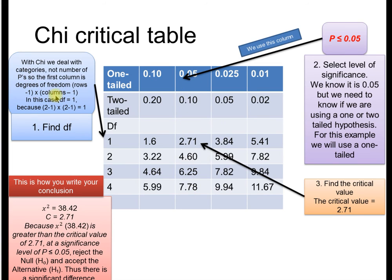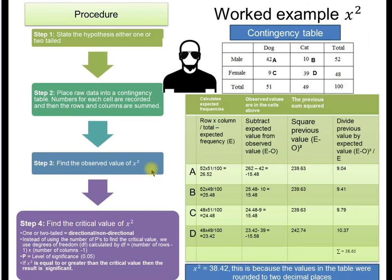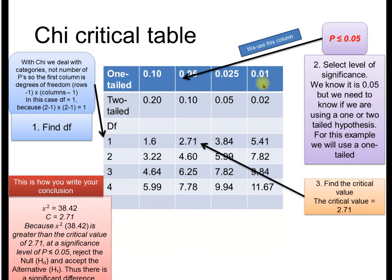The degrees of freedom we work out using this formula here. You take the contingency rows, so we've got two rows and two columns. Rows minus one times columns minus one is two minus one is one. Two minus one is one. Therefore, it's one times one. One times one is one. So we know what degrees of freedom we're using. We're using one. So our critical value is 2.71.